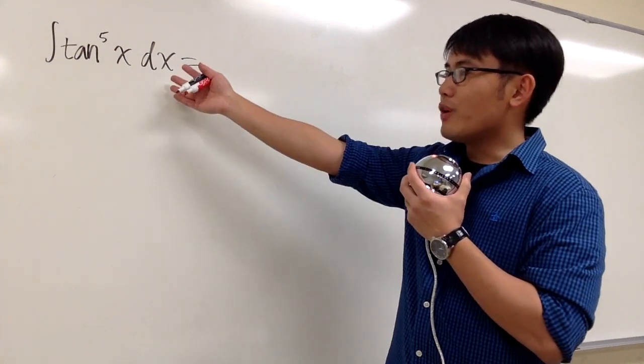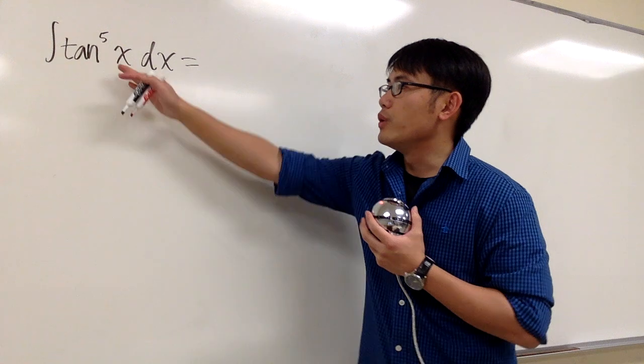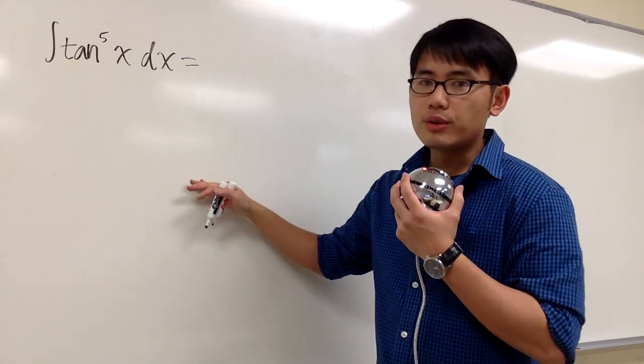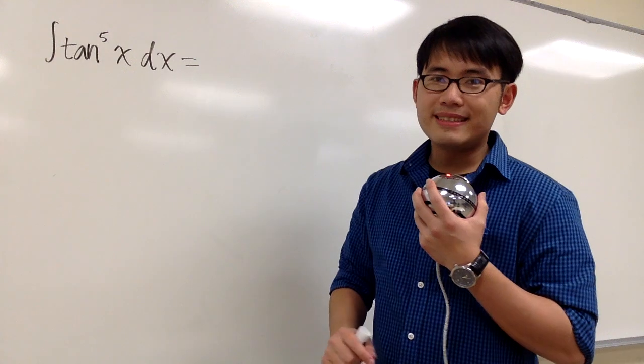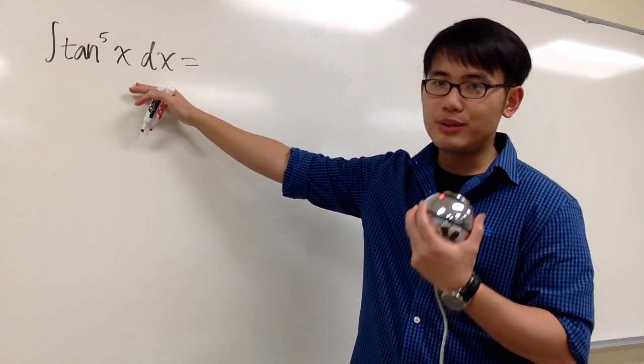Ladies and gentlemen, integral of tangent to the fifth power x. We have two ways to do it. The first way is we write this in terms of sine and cosine. So we have sine to the fifth power over cosine to the fifth power. You can try that. But I would like to use tangent, and maybe we can somehow squeeze out secant to help us out.